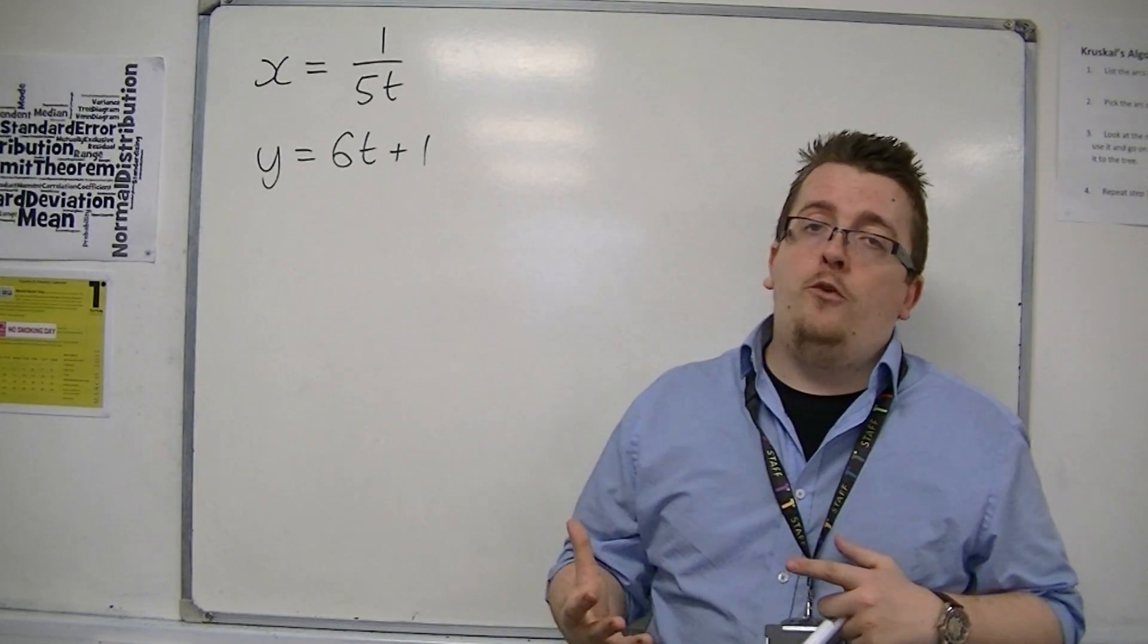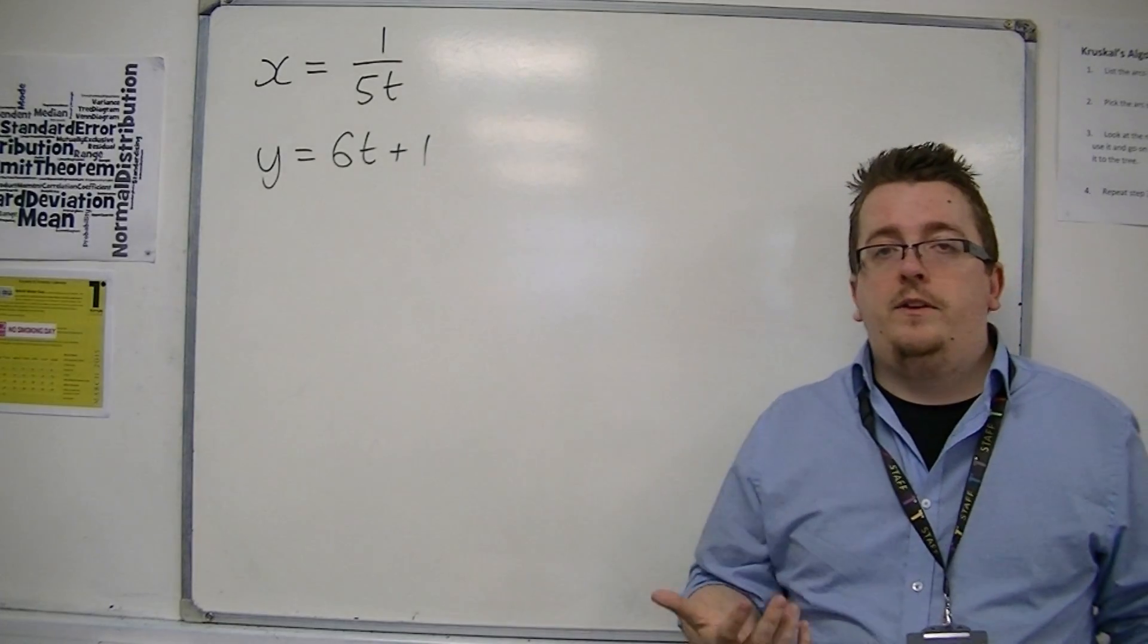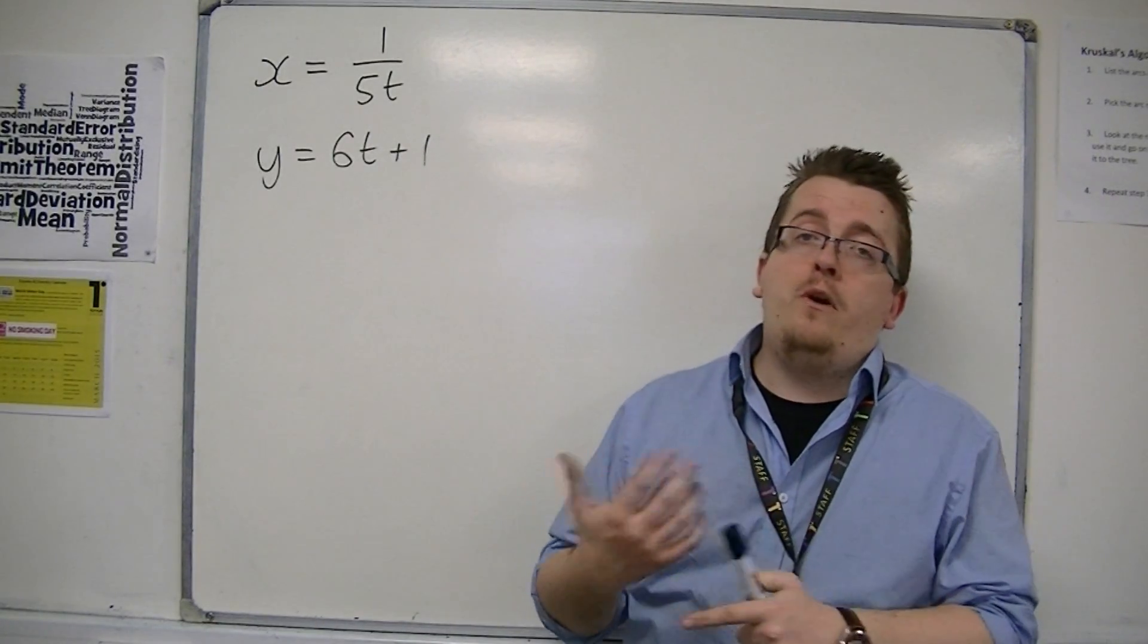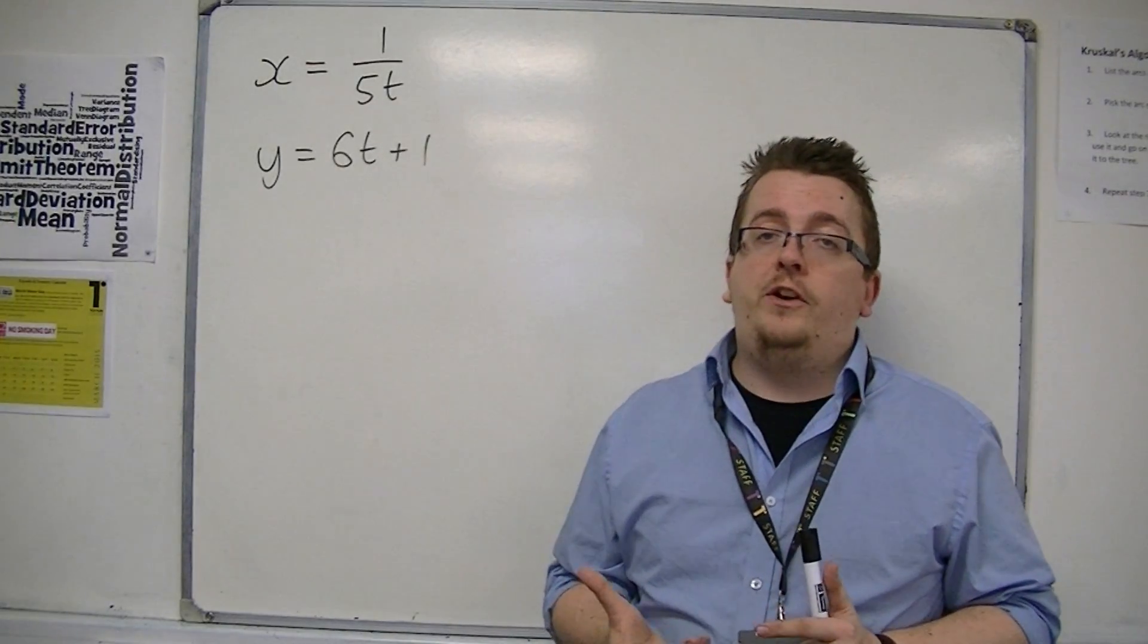One thing that you really need to look out for, however, is that if you have a t squared, you don't want to go around square rooting things. Because that's going to throw up pluses and minuses, and you need to take account of that.